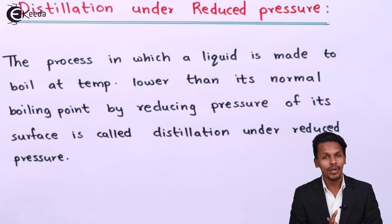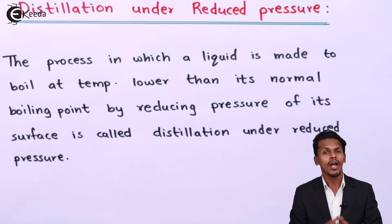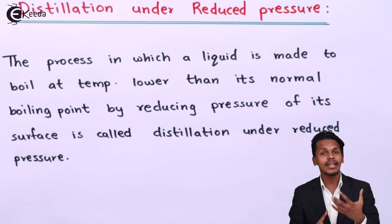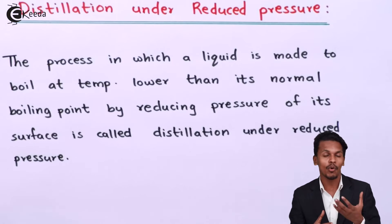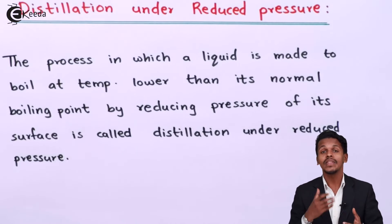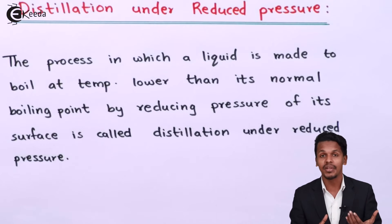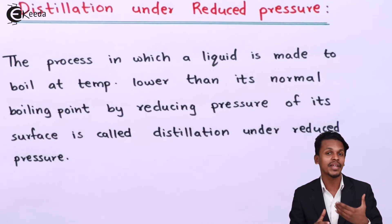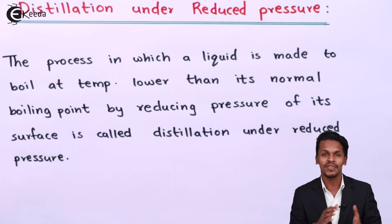This is a simple concept that can be explained with the help of a diagram. The principle is: whenever a liquid has a vapor pressure of 1 atmosphere, it boils. But if that 1 atmosphere pressure is reduced, we don't need to provide the full temperature — in fact, we provide less temperature to convert the liquid into gas. That is the principle behind distillation under reduced pressure.